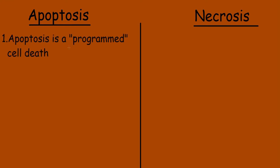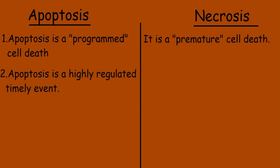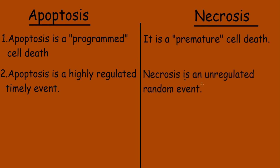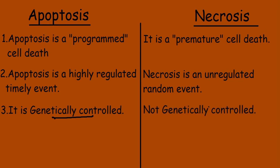Let's study the differences between apoptosis and necrosis. First, apoptosis is a programmed cell death, while necrosis is a premature cell death. Second, apoptosis is a highly regulated and timely event, while necrosis is an unregulated, random event. Third, apoptosis is genetically controlled, while necrosis is not genetically controlled.